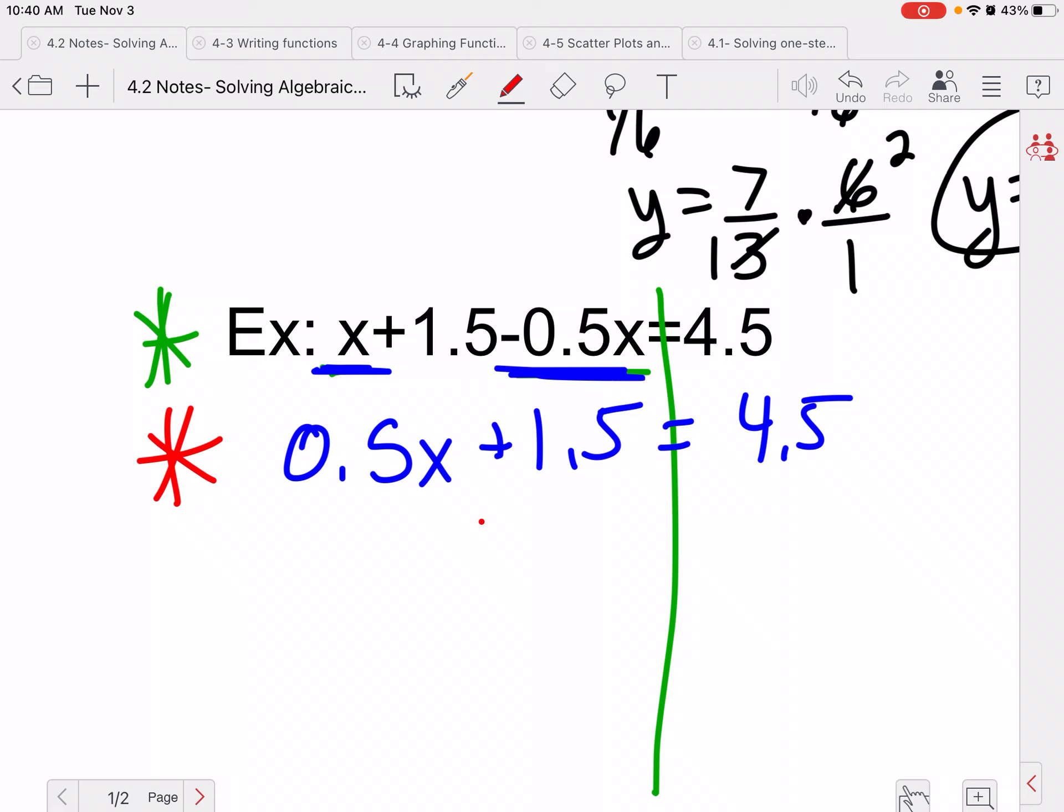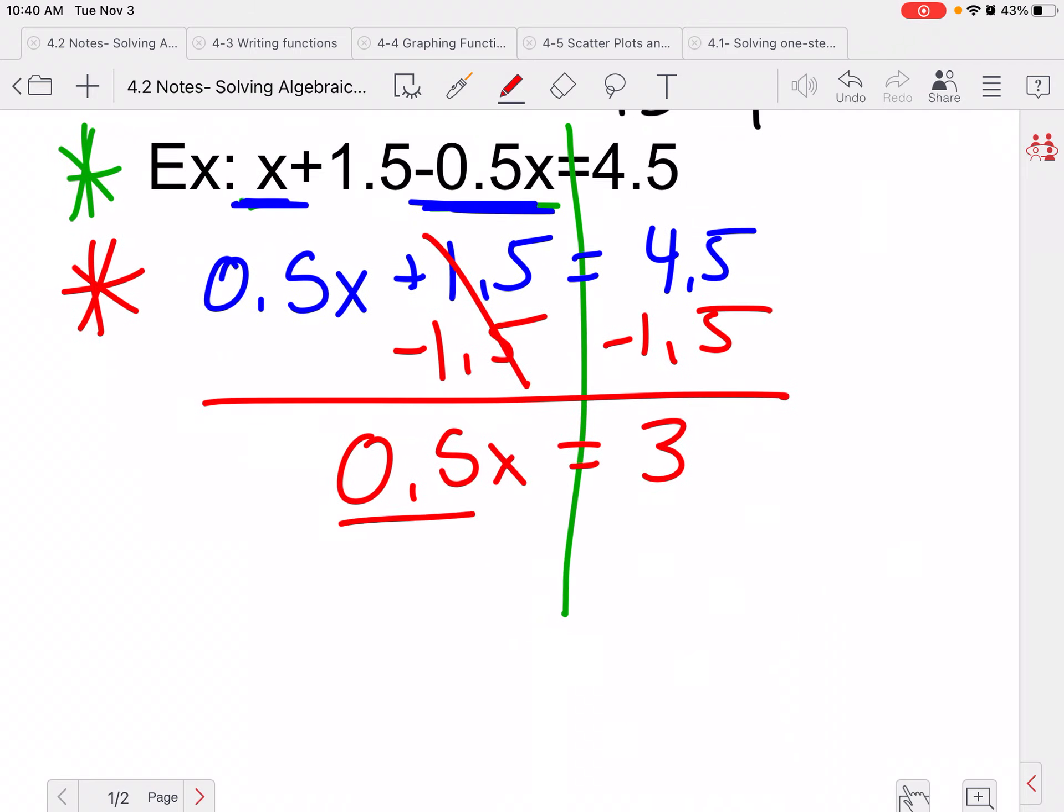We're going to go ahead and subtract the 1.5 from both sides, because we get rid of our addition subtraction first. This cancels to be 0, so I'm left with 0.5x on this side. 4.5 minus 1.5 would be 3. We're going to go ahead and divide by 0.5, and you may use a calculator if you so desire. So this cancels to be 1, so I'm left with x. And 3 divided by 0.5 is 6.